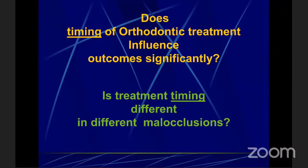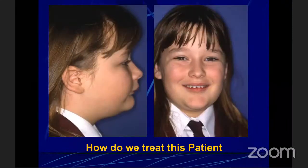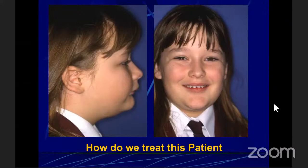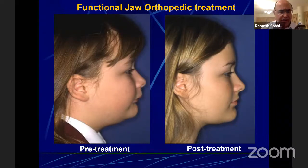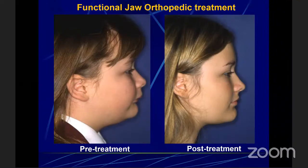The question is asked: does timing of orthodontic treatment influence the outcome significantly? Or at what stage of skeletal maturity should we treat this particular patient? And is the treatment timing different in different malocclusions? If we see this patient who came to me at 12 years of age, she's at the peak of the pre-pubertal growth spurt. She has a retrognathic mandible, quite a bit of dental velloprotusion, and short facial height. These kinds of patients are perfect for growth modification.